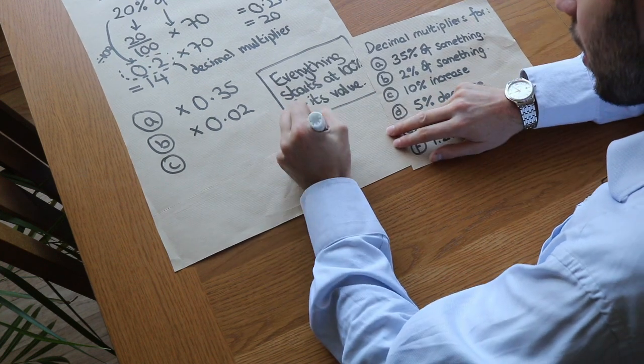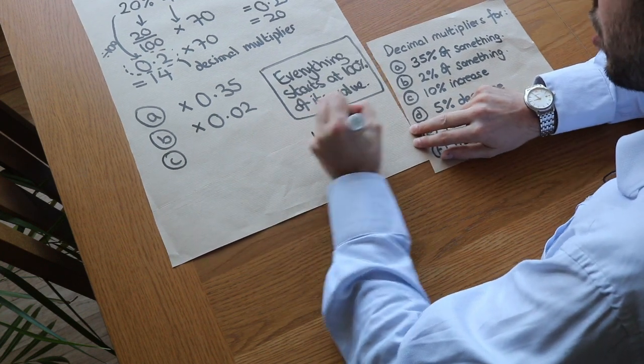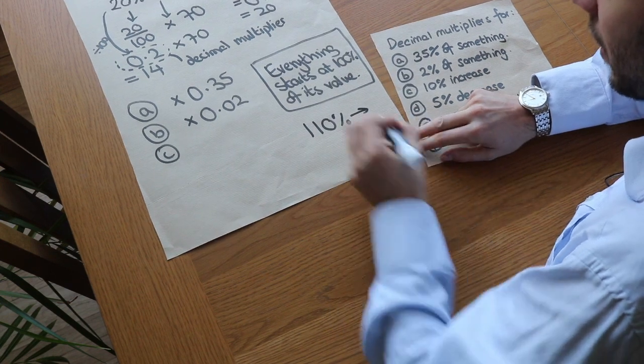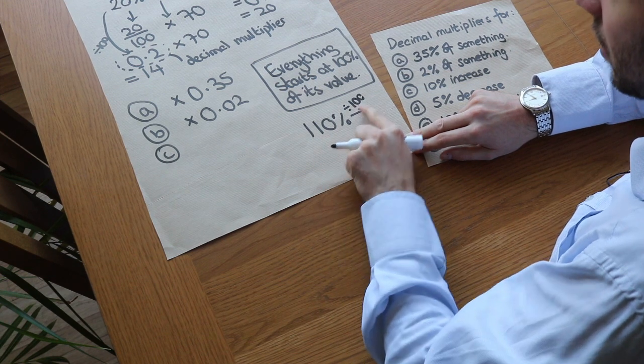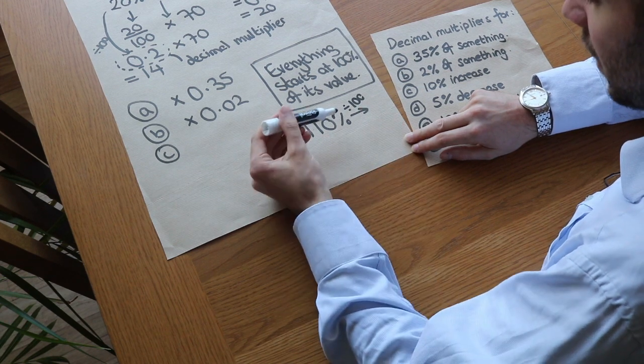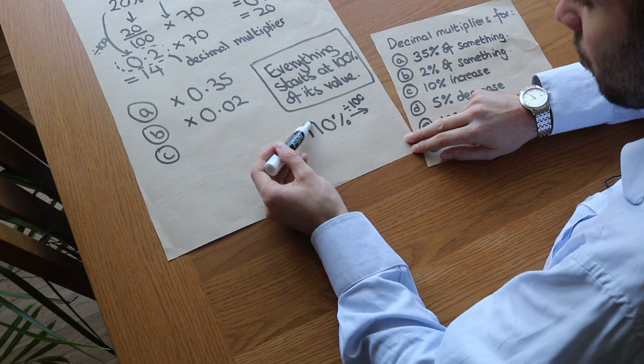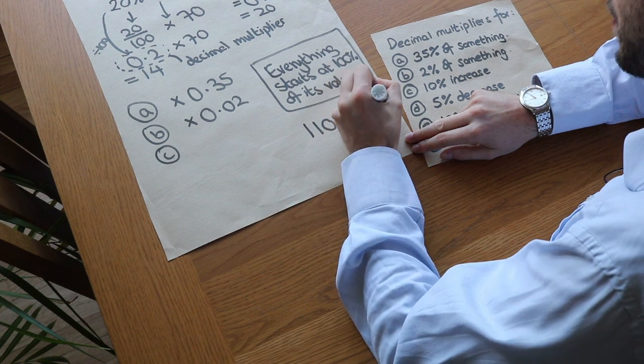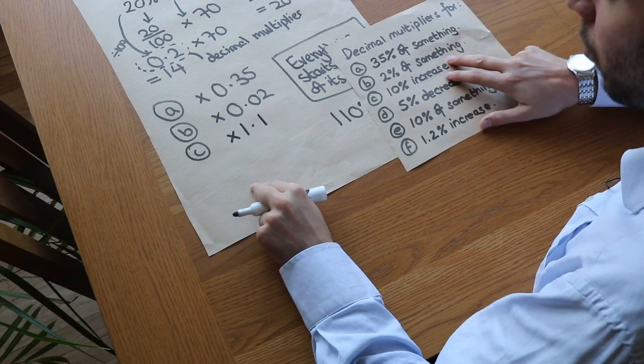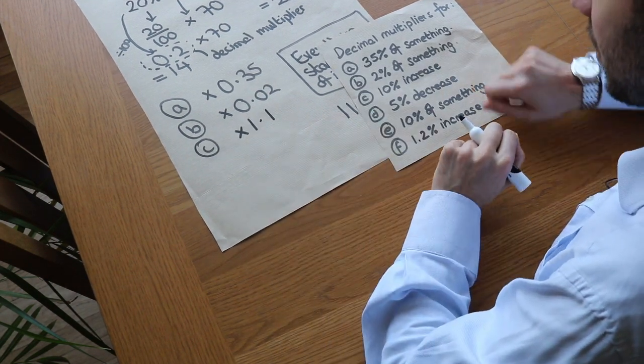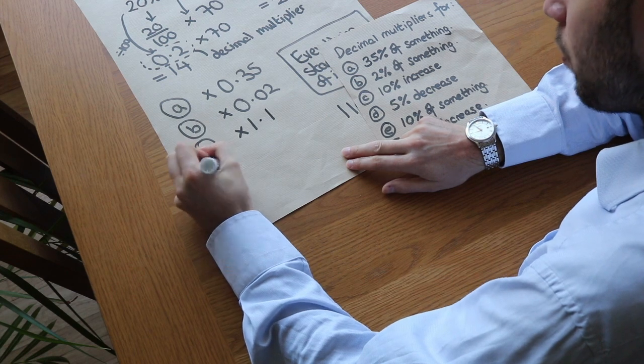We just need to convert 110% to a decimal. Remember, to convert from a percentage to decimal, just divide it by 100. 110 divided by 100 moves the decimal place twice - once, twice - it'd be 1.1. So if we multiply a number by 1.1, we would increase it by 10%.